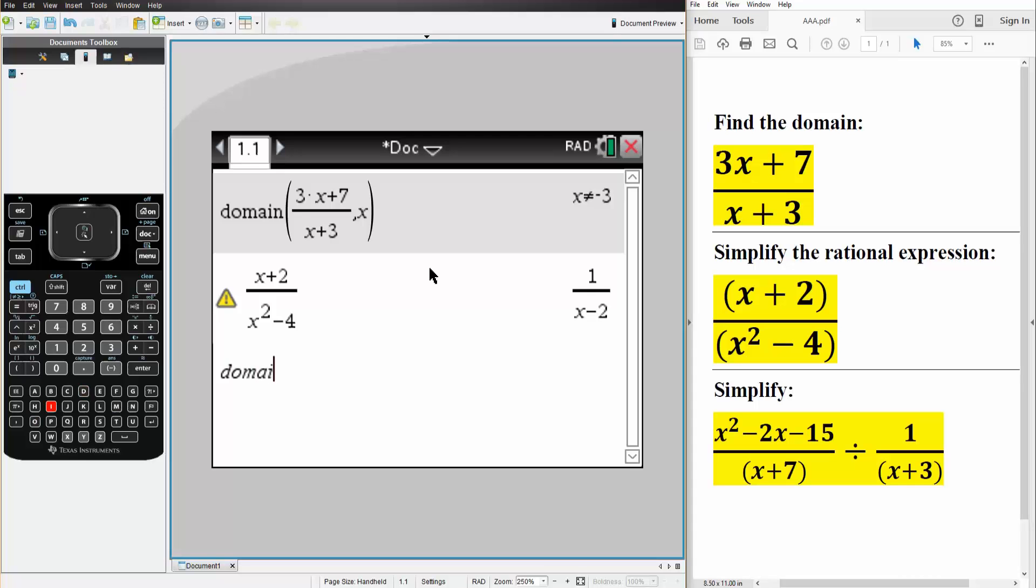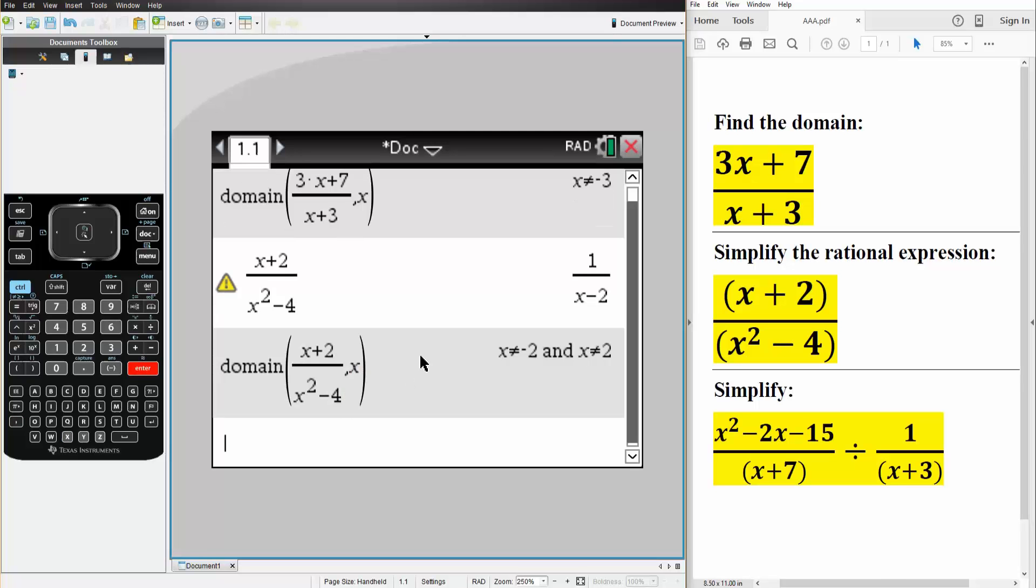So we will look up the restrictions, so we can say domain, and we do the exact same thing as we did for this problem, comma, x. And so we got to take note that x cannot equal negative 2, and x cannot equal 2 for this problem.